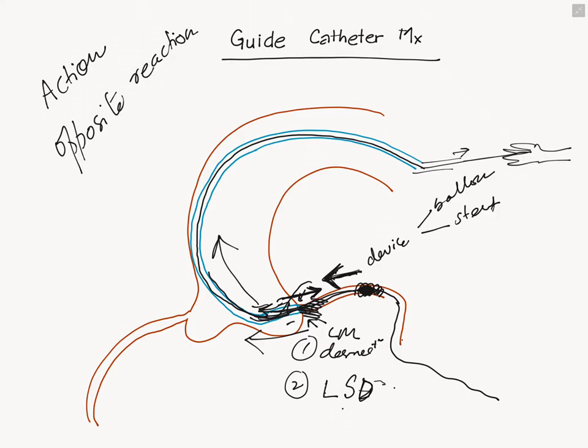That's how you manage the guide catheter while putting in or pulling out a device. This is the time to take another cine or angiogram after you've placed the stent. You have to re-engage the guide, so your hands should quickly switch to re-engagement of the guide.